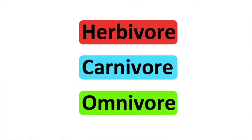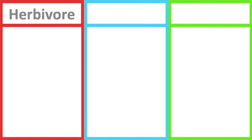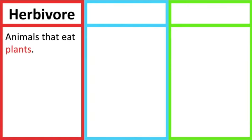Herbivores are animals that eat plants. For example, sheep eat plants; therefore, they are herbivores.